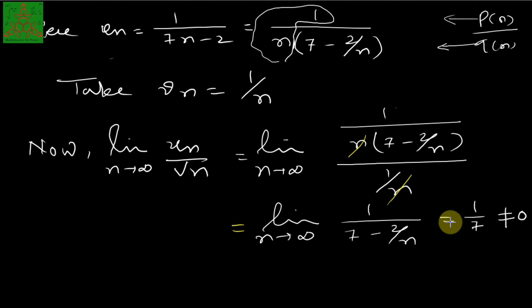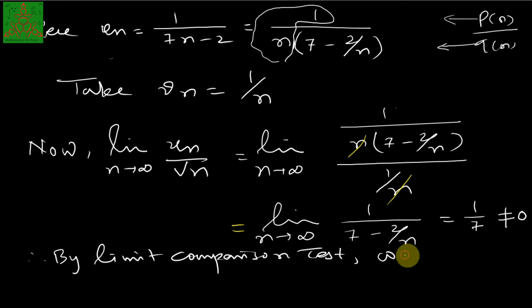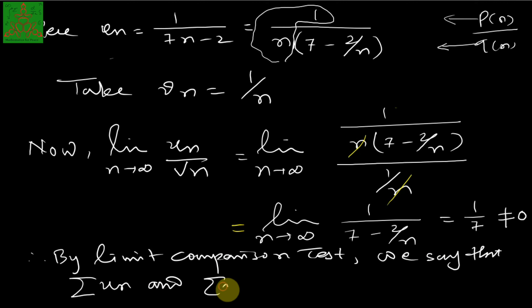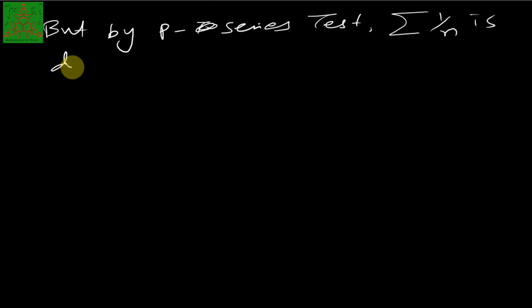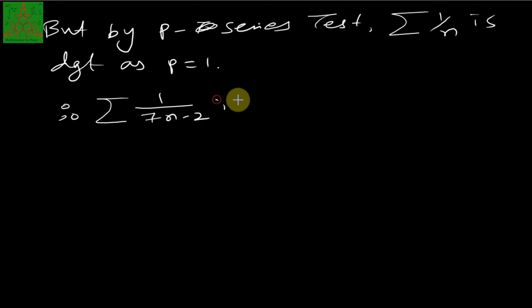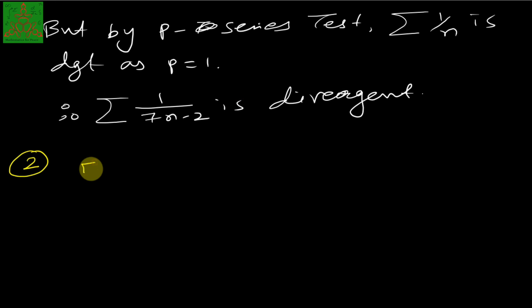Since L = 1/7 is a finite non-zero number, by the limit comparison test, summation of u_n and summation of v_n are convergent or divergent together. But by the p-series test, summation of 1/n is divergent (p = 1). Therefore summation of u_n, that is 1/(7n − 2), is also divergent.